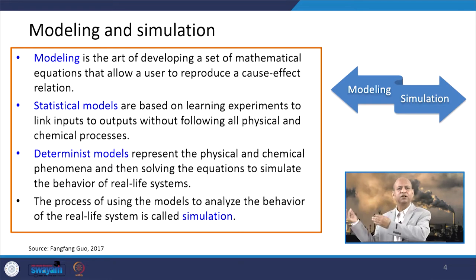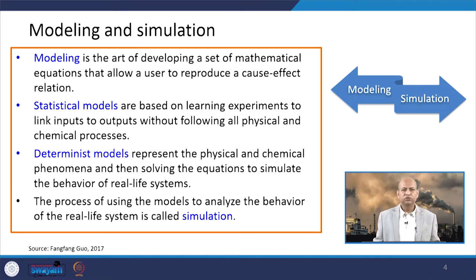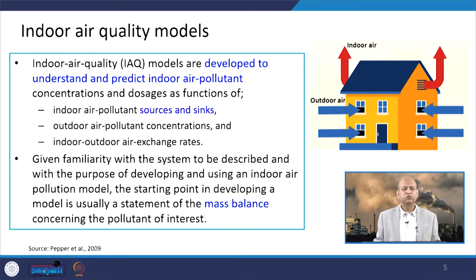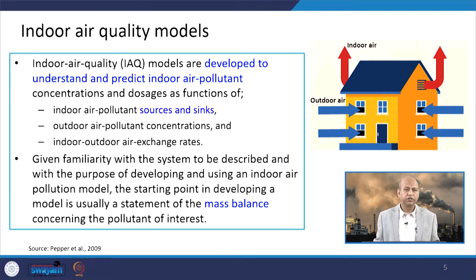Whether it is ambient air or indoor air or any kind of environment, when we try to use certain models to represent the processes related to that environment — indoor or outdoor — we are basically simulating that particular environment. Now, indoor air quality models have been developed to predict or estimate indoor air pollutant concentrations and dosage, because the dose function is important for exposure assessment and risk assessment. Basically, three functional parameters are important to model the indoor air environment: indoor air pollutant sources and sinks.